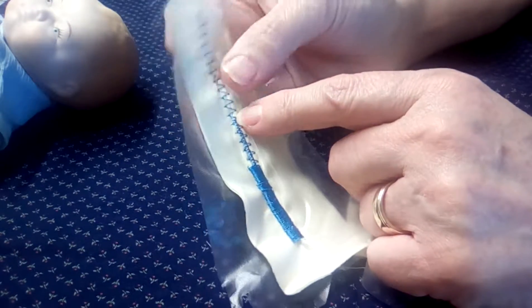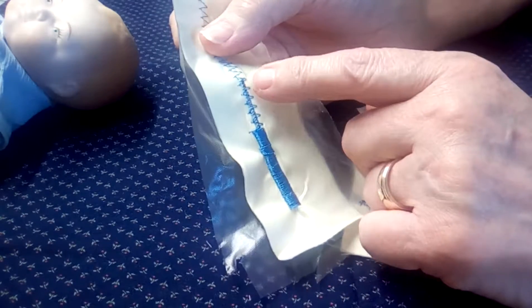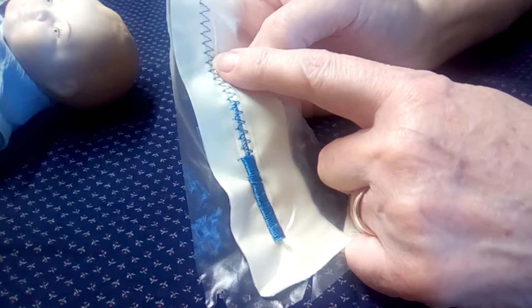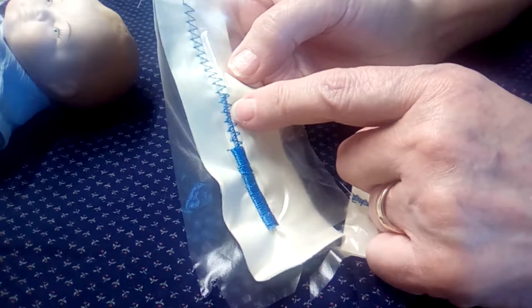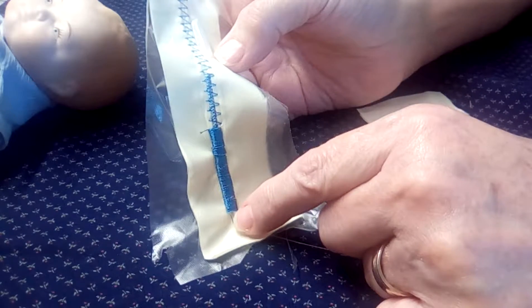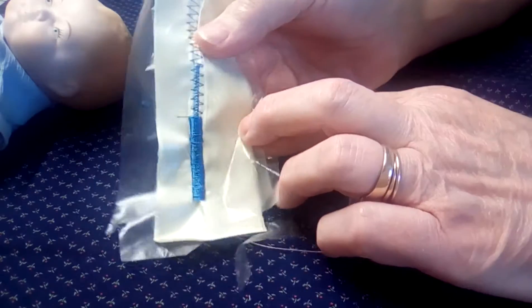I take and go with an ordinary zigzag, half the width. So if this is seven, I go 3.5 and I sew it down the center. And then I go back